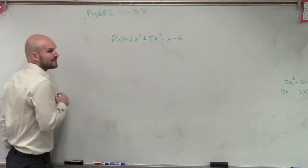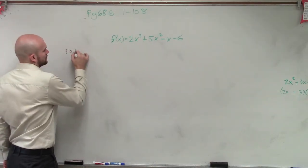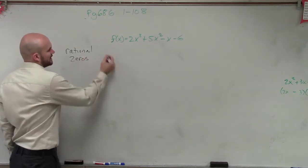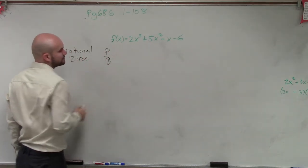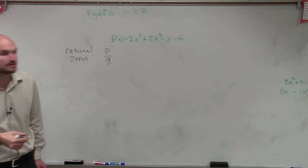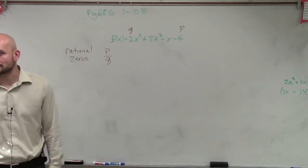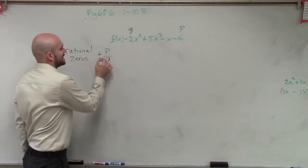So remember, all of your rational zeros can be written as p over q, right? Where here's your p, and your leading coefficient is your q. So remember, actually, it's plus or minus.